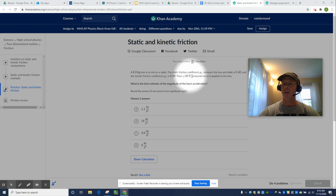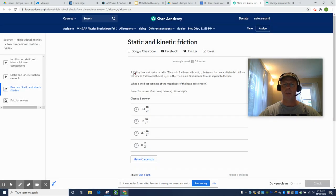Then, a 30 newton horizontal force is applied to the box. What is the best estimate of the magnitude of the box's acceleration? So, it sounds tricky, but once you know what some of these words mean, it's easy. So, that's the mass, and all you do is mass times acceleration due to gravity. So, 6 kilos weighs about 60 newtons.